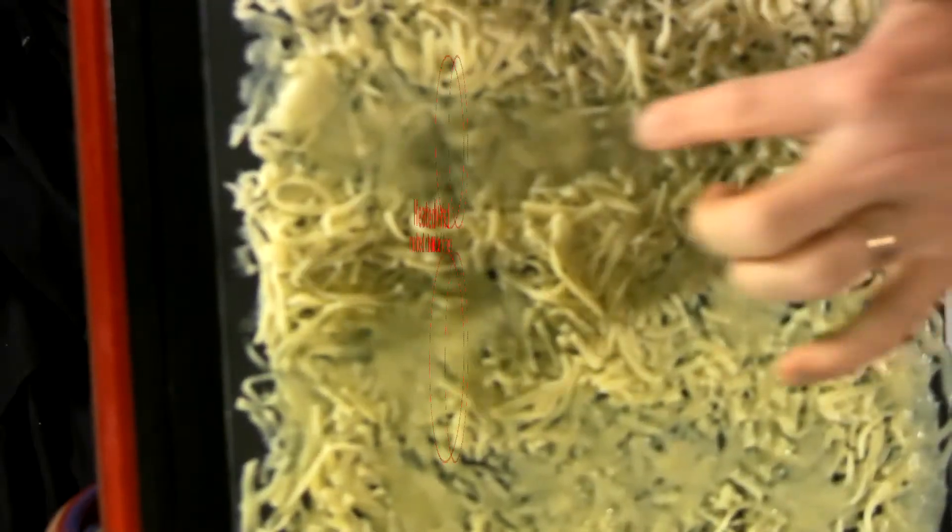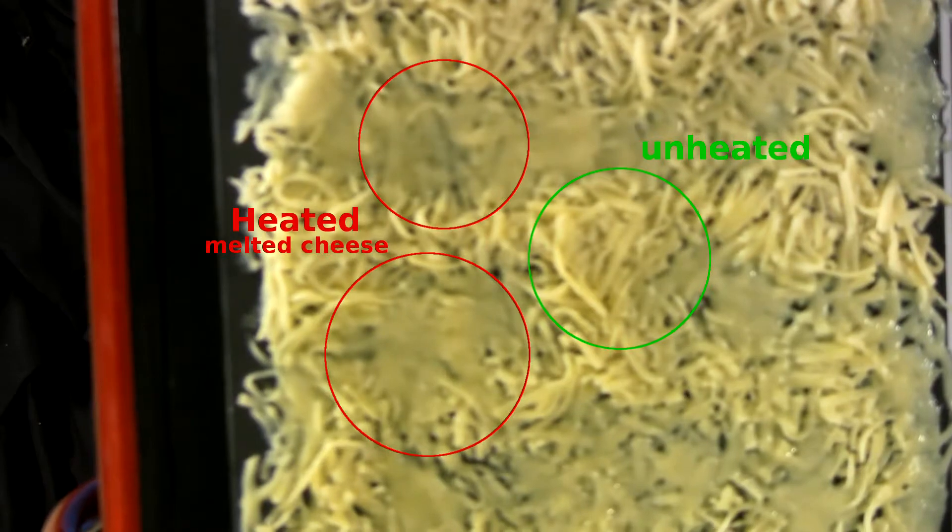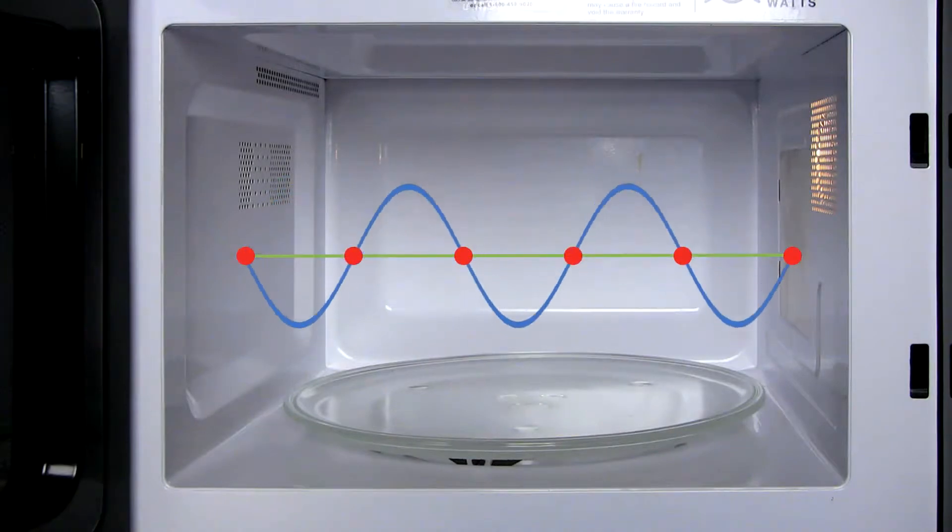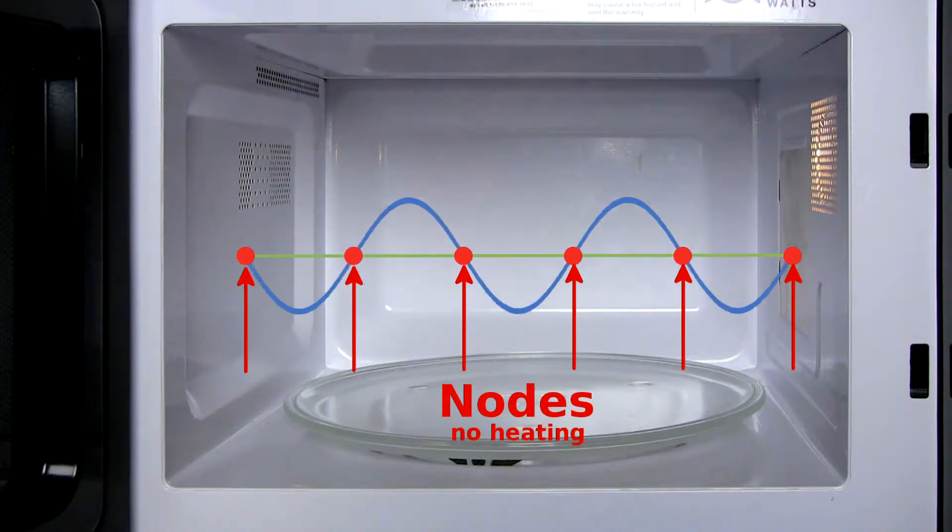You can see on here sections where the cheese is completely melted and other sections where it's completely unheated. The oven's metal walls only reflect waves of a length that fits inside the oven. This standing wave causes hot and cold spots inside the oven. The three-dimensional pattern of waves is difficult to predict, but the principle can be seen by looking at the waves in a single dimension. The peaks and valleys in the wave represent the greatest energy of the wave, while the nodes here correspond to the cold spots inside the chamber.